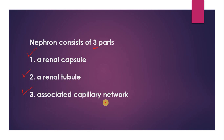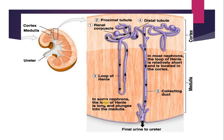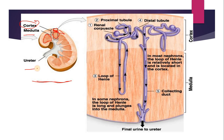The third part is the associated capillary network, which consists of arteries and veins present around the nephron — they carry blood into and away from the kidney. Now let's look at the image of the nephron. This is the structure of the kidney; the upper portion is the cortex, the lower portion with the renal pyramids is called the medulla, and this is the ureter.